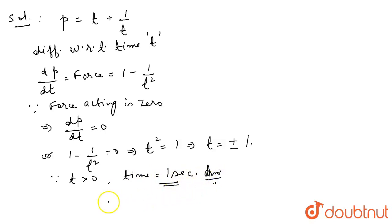Now, we have to find the momentum at that time. Momentum p at that time will be, in place of t, write 1 plus 1 by 1 which is 2 kilogram meter per second. This is the second answer.